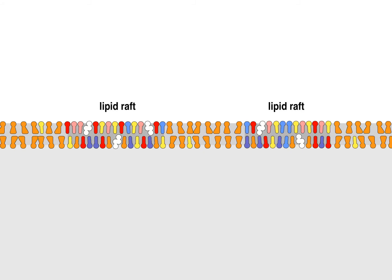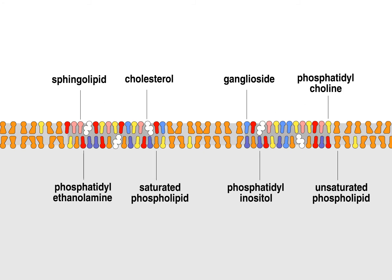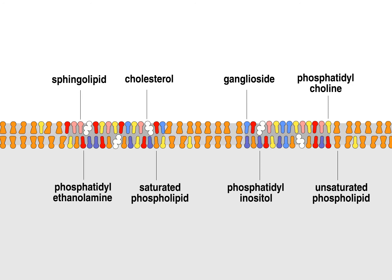Lipid rafts are specialized regions of the cell membrane that are enriched for particular lipids and cholesterol, and consequently are more rigid than the rest of the membrane. These regions were first discovered because they remain intact when certain detergents are used to solubilize the cell membrane.